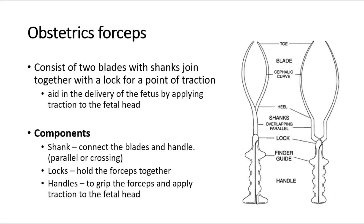There are a few components of the forceps, as seen in this picture. There are the two long blades, and the shank connects the blades and the handle. The shank can be overlapping or parallel to each other, and there is the lock that holds the forceps together and the handles to grip the forceps and apply traction to the fetal head.